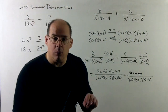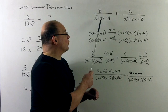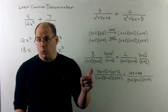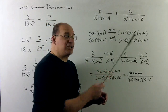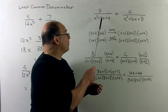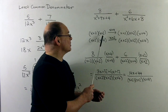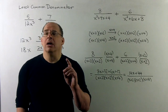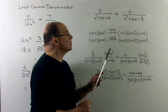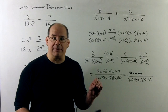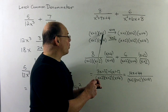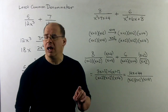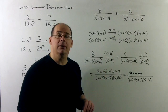Now a bit more work: 8 over x² + 4x + 4, plus 6 over x² + 6x + 8. The denominators don't match, so we need an LCD. Factoring: x² + 4x + 4 = (x+2)(x+2), and x² + 6x + 8 = (x+2)(x+4). The first denominator is missing an (x+4); the second needs another (x+2). So the LCD is (x+2)(x+2)(x+4). I'll leave it in factored form.